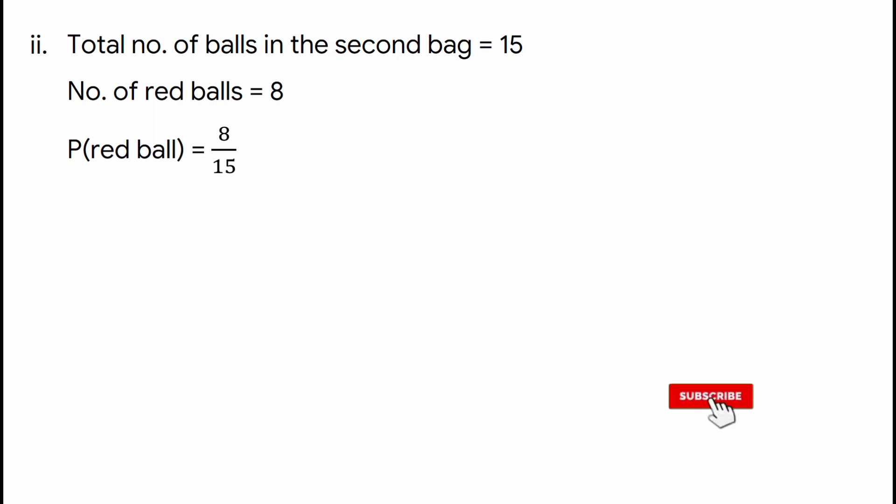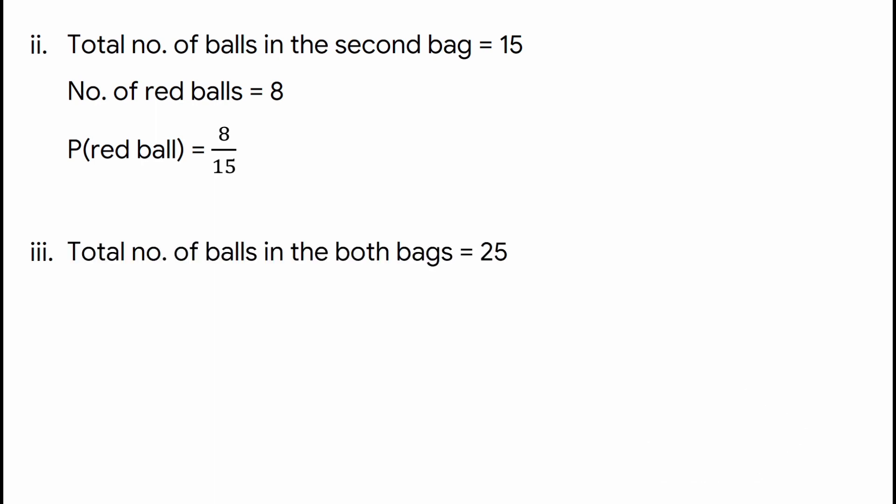Now if all the balls are combined into a single bag, the total number of red balls is 8 plus 3, which is equal to 11. The total number of red balls will be 11. In this case, the probability of red balls will be equal to 11 by 25.